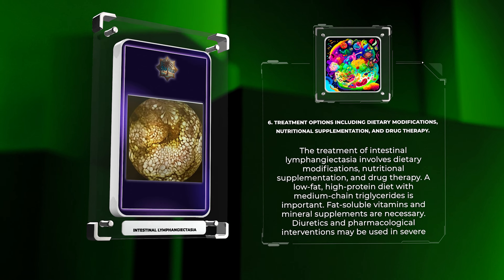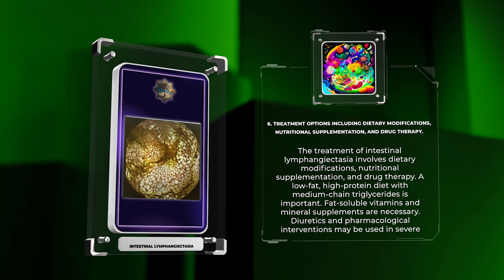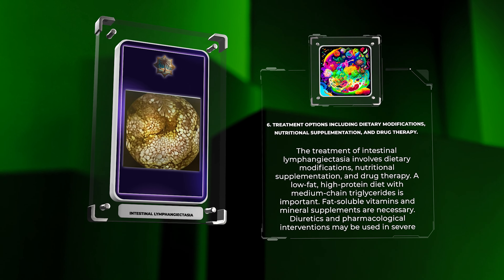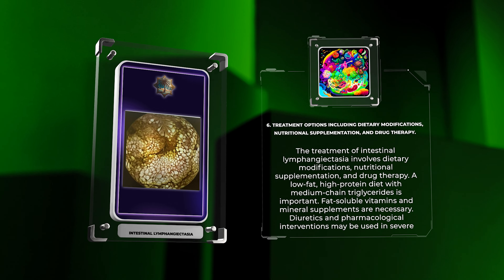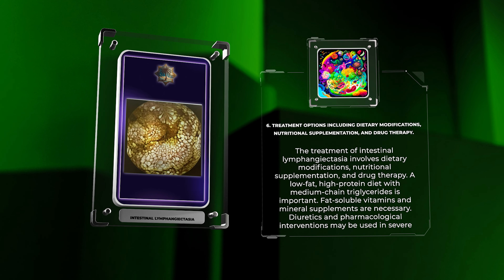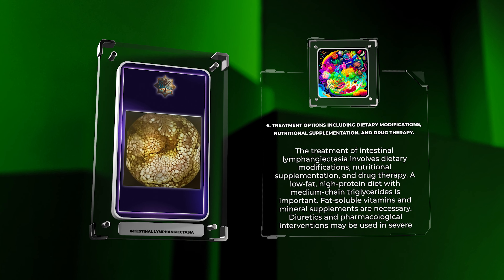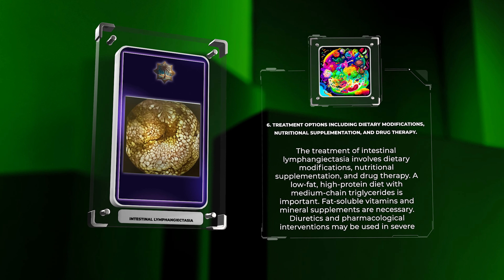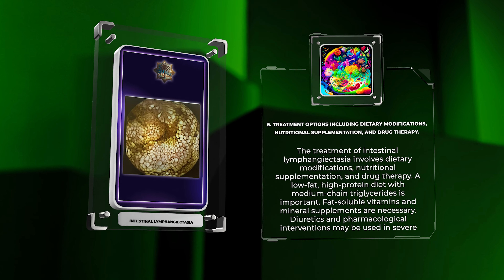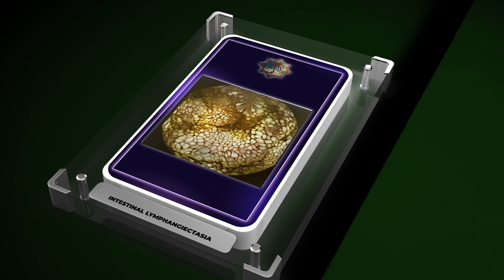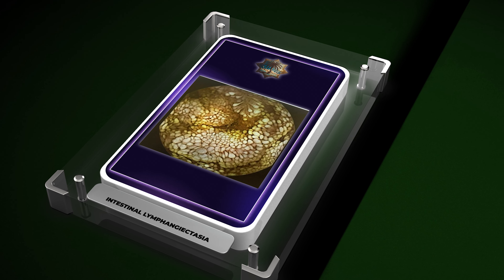The treatment of intestinal lymphangiectasia involves dietary modifications, nutritional supplementation, and drug therapy. A low-fat, high-protein diet with medium-chain triglycerides is important. Fat-soluble vitamins and mineral supplements are necessary, and diuretics and pharmacological interventions may be used in severe cases.